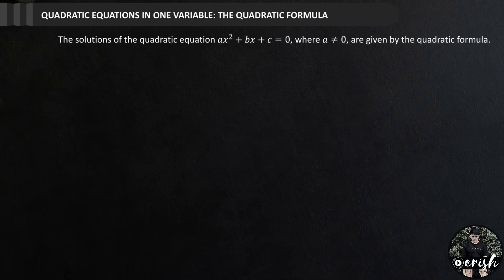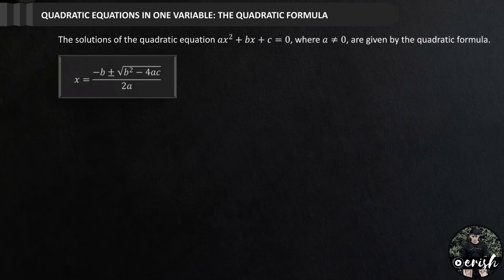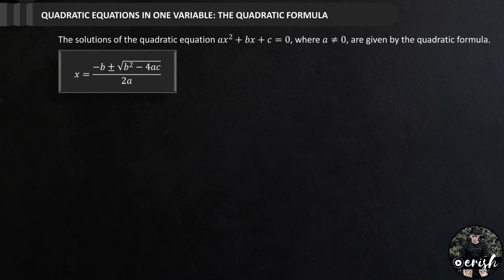The solutions of the quadratic equation ax squared plus bx plus c equals 0, where a is not equal to 0, are given by the quadratic formula: x is equal to negative b plus or minus square root of b squared minus 4ac, over 2a.